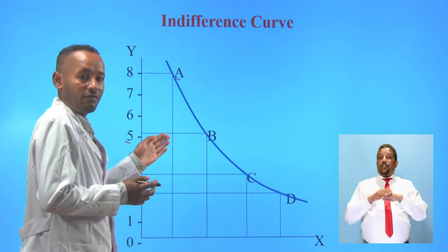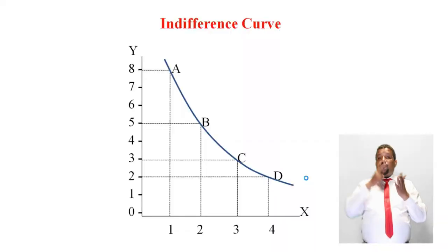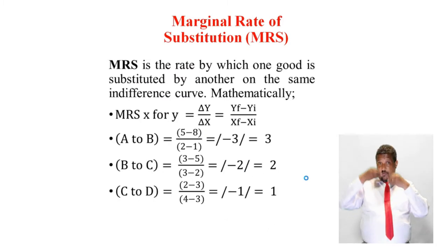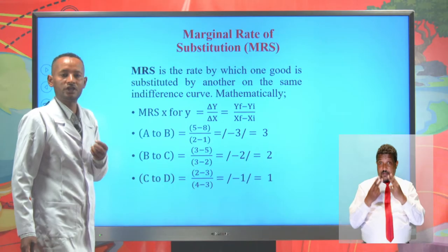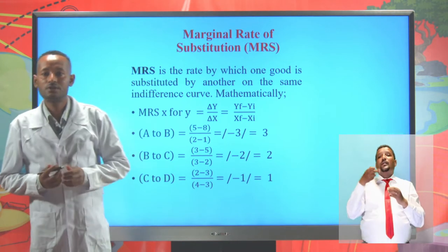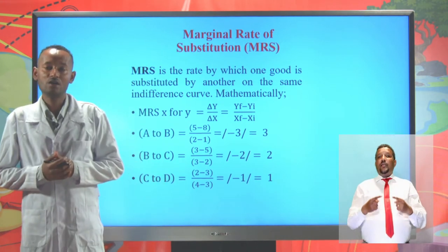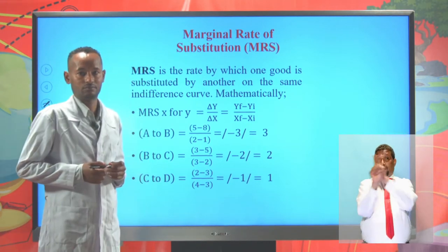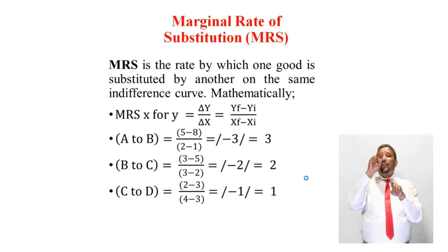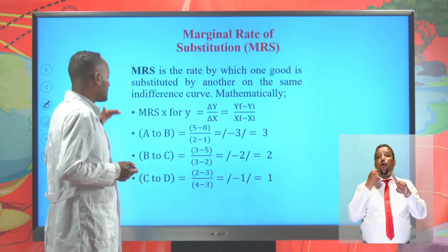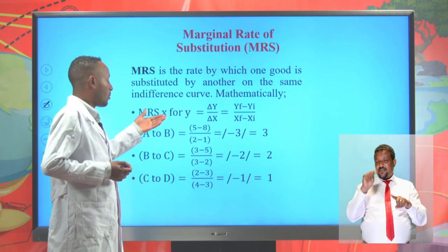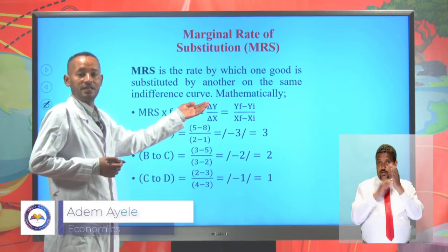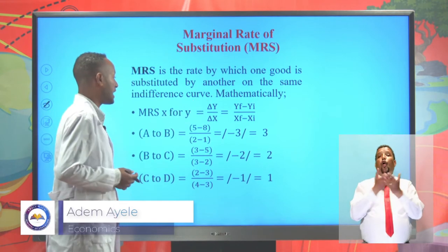On the indifference curve, any point gives equal level of satisfaction. The marginal rate of substitution is the rate by which one commodity is substituted for another on the same indifference curve. From the indifference sets, the marginal rate of substitution of commodity X for Y is calculated by dividing the change in commodity Y that is given up by the change in commodity X that is gained.